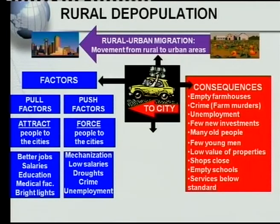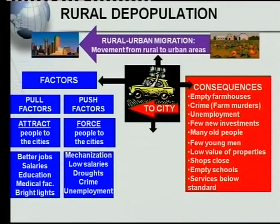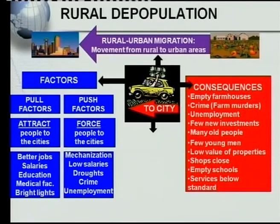The following very important thing: the consequences. What have we done so far? We've seen what rural-urban migration is — the movement from rural to urban areas — and we've looked at why this movement takes place. Now the consequences, especially in the rural areas: we've got empty farmhouses, crime, farm murders, unemployment, few new investments, many old people, few young men, low value of properties, shops that close, empty schools, and services below standard. These are the negative consequences on the rural areas as a result of rural depopulation.